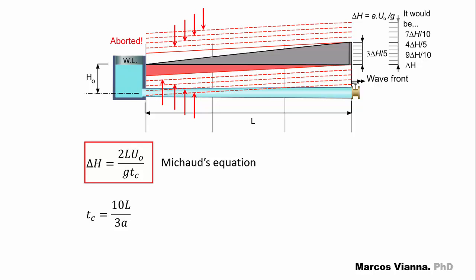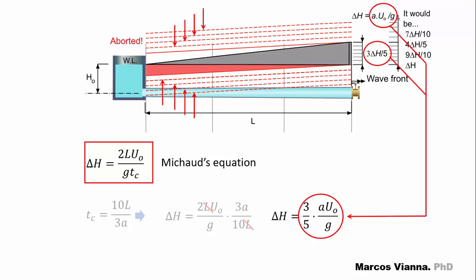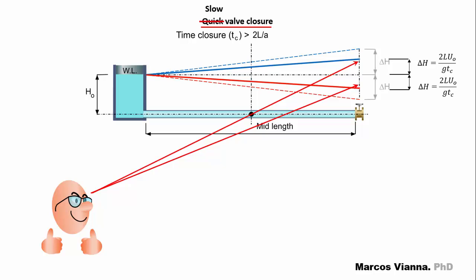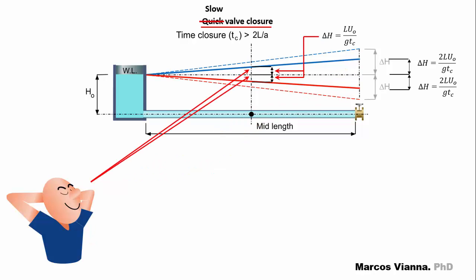As we saw, the closure time of the valve was 10L over 3A. According to Michaud, the pressure variation would be 2LU0 over G times 3A over 10L, or three-fifths AU0 over G — which is the value that we found. To make it clear: if we close the valve in a time equal to or smaller than the reflection time of the pipe, the pressure variation at the valve will be AU0 over G. If we close the valve in a time greater than the reflection time, the pressure variation will be smaller. If we assume the valve closes linearly, the pressure variation at mid-length will be equal to LU0 over GTC.